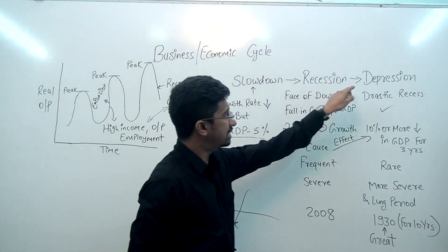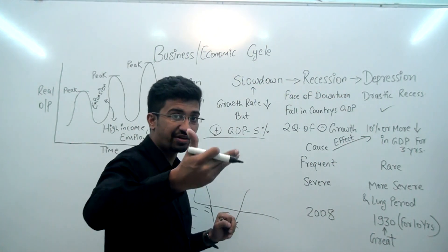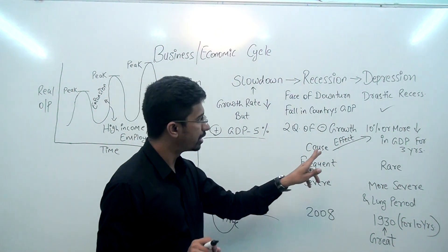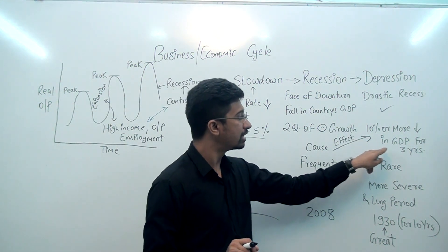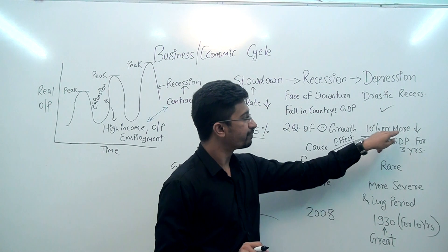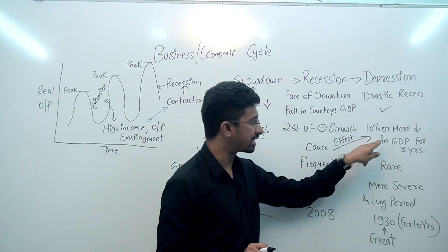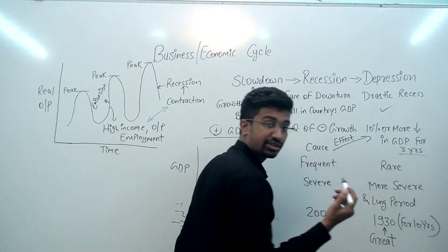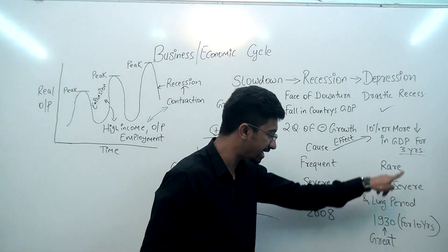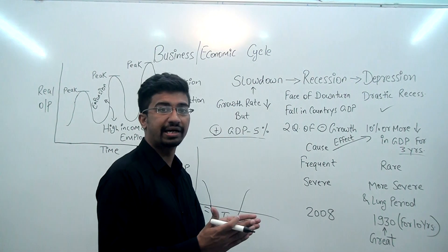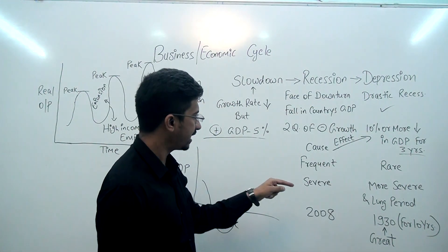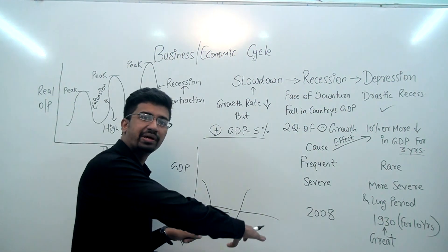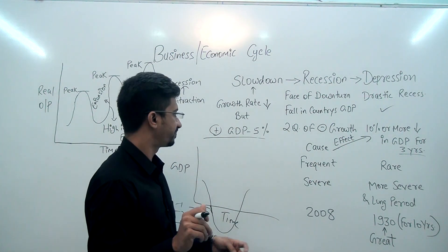Now, 2 quarters have passed — that means recession. But what about depression? Depression is a more severe condition. Here, there must be even more consequences. Friends, depression is that condition where our GDP growth rate drops by 10% or more, and this drop is maintained for 3 years — it's such a long period. And we will also see an example of this from 1930, where for a very long time period, the GDP growth rate stayed negative. So this is one cause — recession comes first, and after that, depression comes. Meaning if recession does not come, depression cannot come.